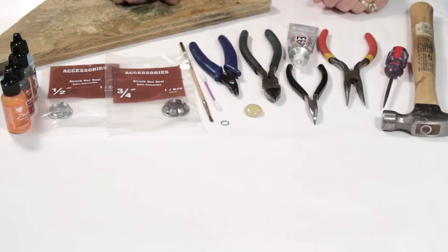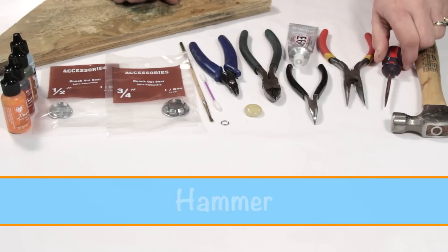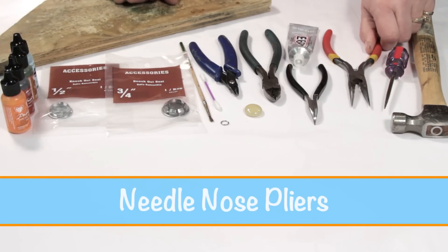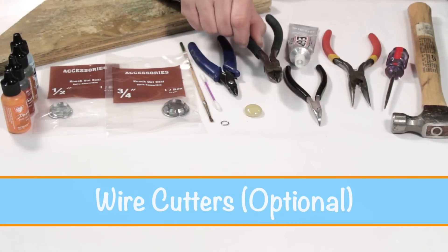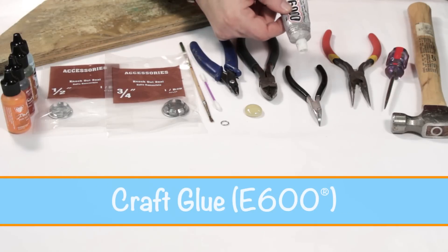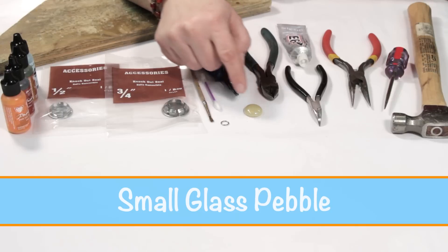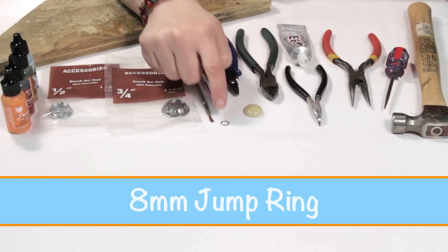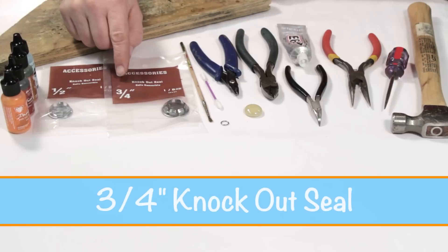So let's get started. For this project you will need a hammer and awl, a pair of needle nose pliers, a pair of bent nose pliers, a pair of wire cutters, a pair of crimping pliers, glue E6000, a glass pebble, an 8mm jump ring, a Q-tip or fine brush.